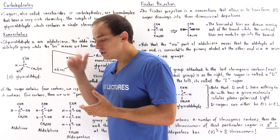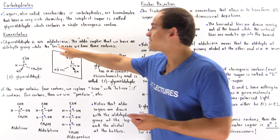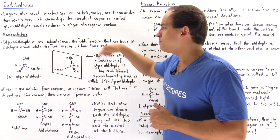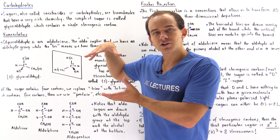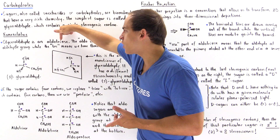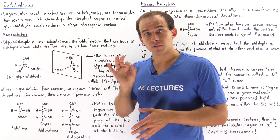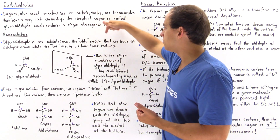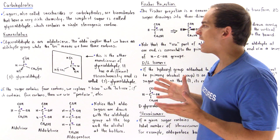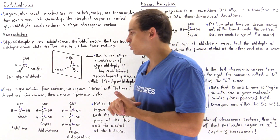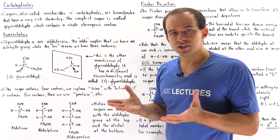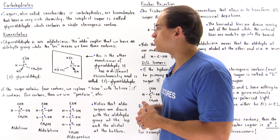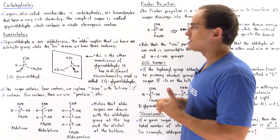Our simplest sugar, glyceraldehyde, is part of a category of sugars known as the aldotriose. The 'aldo' part means we're dealing with an aldehyde — so one end of the sugar chain has an aldehyde. The 'tri' means we have three carbons total inside our molecule, and the 'ose' we'll discuss in a moment. If 'aldo' is replaced with 'keto,' that means the aldehyde is replaced with a ketone group, giving us the ketotriose — three carbons but with a ketone instead.